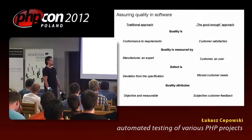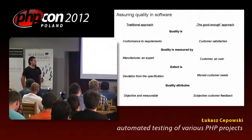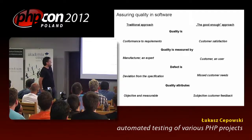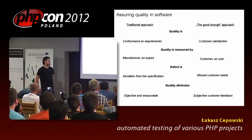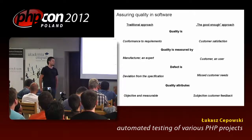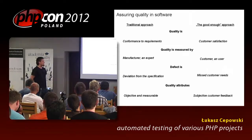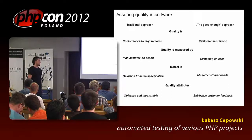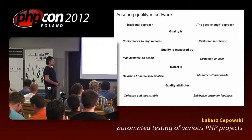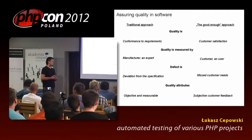In the good enough approach, quality is customer satisfaction. It doesn't really matter if your code is fully tested — what matters is whether the customer is satisfied with the software. Quality is measured by the customer. If a user says the software is scrappy, then even if you did your best, it doesn't have high quality. A defect is when the software doesn't deliver the functionality a customer needs. In this approach, quality is very hard to measure objectively because it's subjective, based on customer feedback.